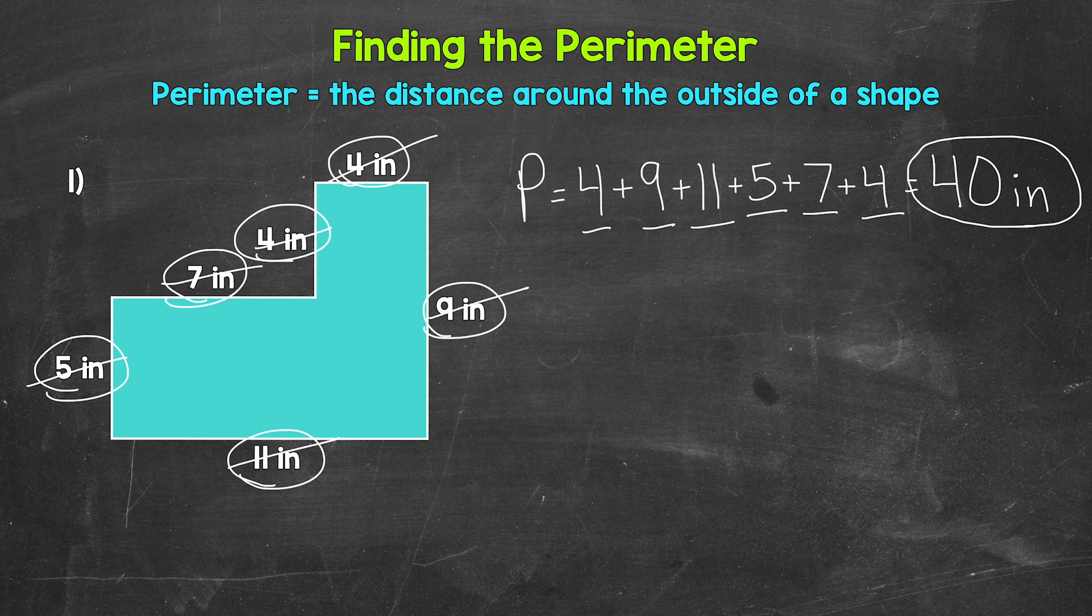Now, before we move on to number two, I do want to mention it does not matter what order we add the side lengths in. As long as they are all included, we will get the correct perimeter. So something to keep in mind.